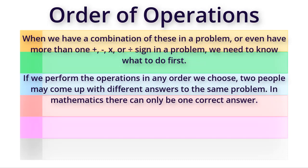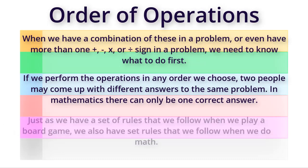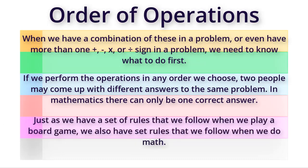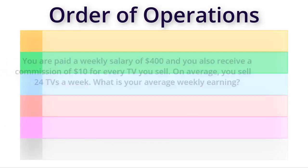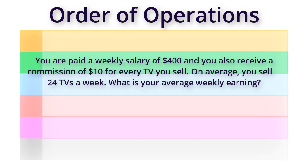In mathematics, there can only be one correct answer. Just as we have a set of rules that we follow when we play a board game, we also have set rules that we follow when we do math. Consider the following situation: you are paid a weekly salary of four hundred dollars and you also receive a commission of ten dollars for every TV you sell. On average you sell 24 TVs a week. What is your average weekly earning?